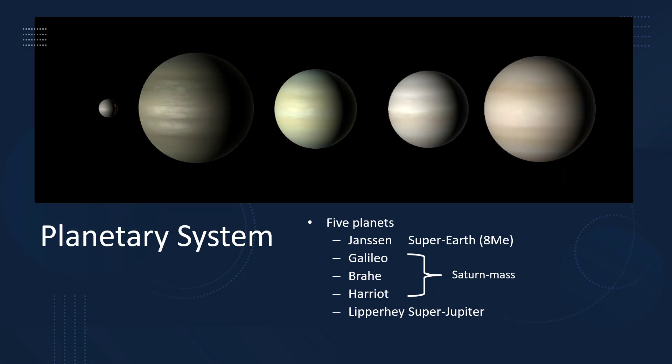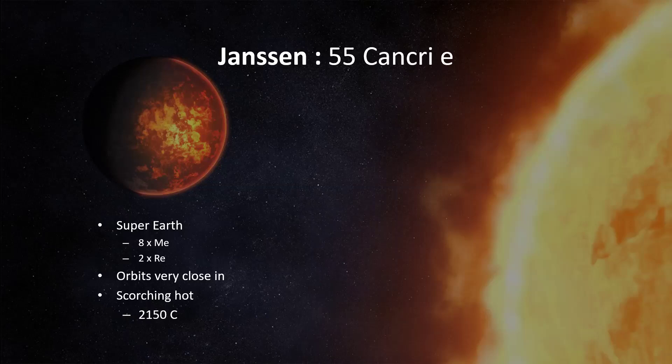This artist's representation shows those planets in order. The innermost one, Janssen, is a super-Earth with eight times the mass of the Earth — bigger than Earth but not as massive as Uranus or Neptune. The next three are Saturn-mass planets of varying density; Galileo is bigger, but the mass of these is less than Jupiter's. The outermost one, Lipperhey, is a super-Jupiter — about three times the mass of Jupiter. Being further away, it's colder, so its envelope has expanded less, which is why its radius is not as great as you might expect.